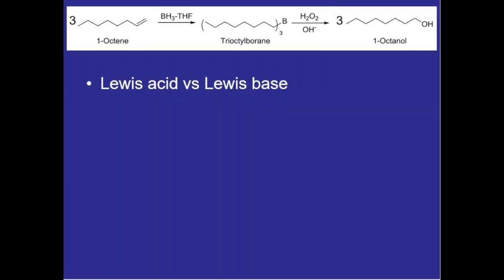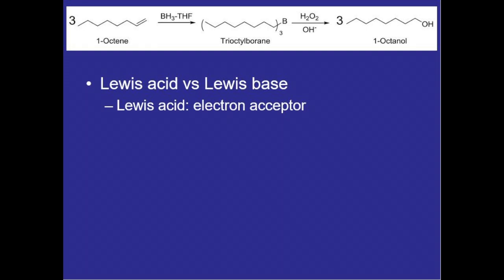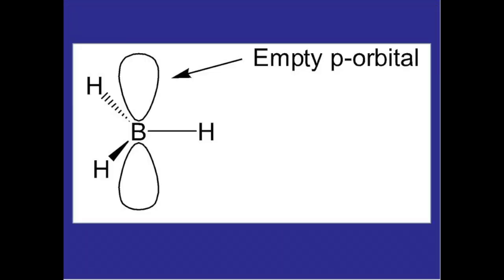We'll be manipulating some Lewis acid Lewis base chemistry in this reaction so for a quick review Lewis acids are electron acceptors and Lewis bases are electron donors. So for example if we look at the borane molecule, boron can make three bonds, bonds with three hydrogens, meaning that it is sp2 hybridized and there's an empty p orbital so this will act as a Lewis acid because electrons will be donated into that empty p orbital.